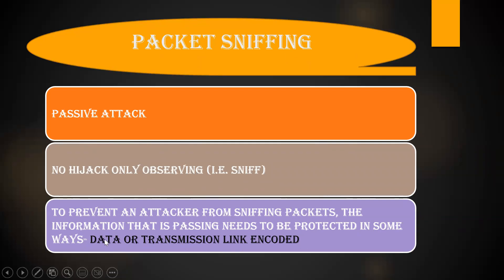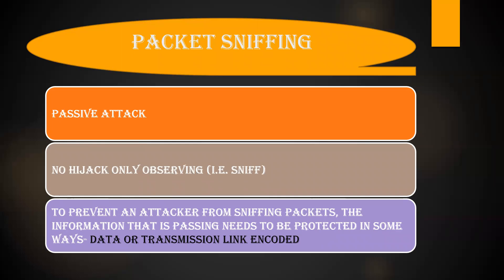In data encoding, the data sent from one end to the other is completely encrypted such that only both users know what data has been sent — a third person cannot read it. In transmission link encoding, the transmission link through which the data passes is itself encrypted or encoded, so that no hijacker can observe the confidential data. This is what packet sniffing is about.